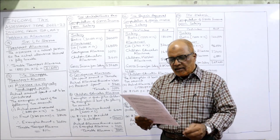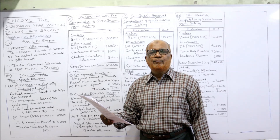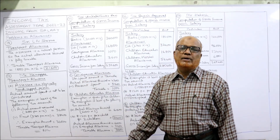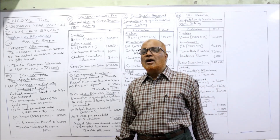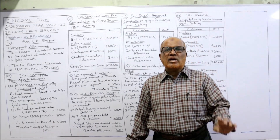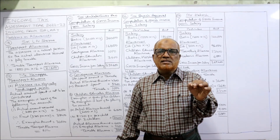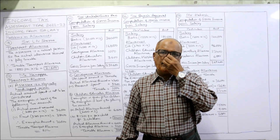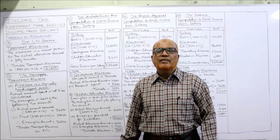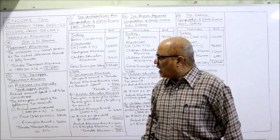14th problem: Calculate the taxable portion of Mr. Kannappa's transport allowance in the following two situations. In Case A, the person is physically handicapped. The Income Tax Act says that if transport allowance is given to a physically challenged, physically handicapped, or blind person, then the allowance is exempted up to 3,200 per month. Actual allowance received or 3,200 per month, whichever is lower, is exempted; the remaining amount is taxable.